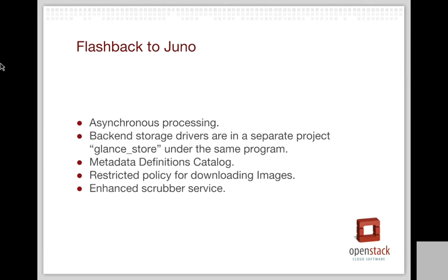Let's have a flashback to Juno. These are the major changes that happened in the previous cycle. Asynchronous processing was a major change that was added. It added a new API for performing asynchronous tasks on the image service. There are three kinds of tasks that can be performed by the user: import, export, and cloning. Currently, the import task has been implemented and supported to a certain extent. We are planning to add export and cloning support in the Kilo cycle.